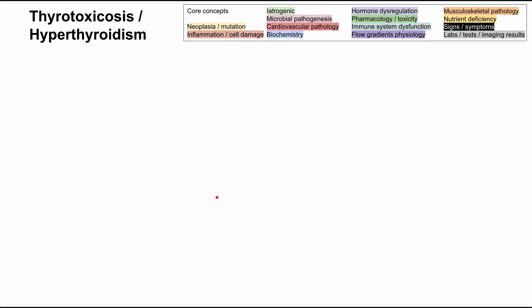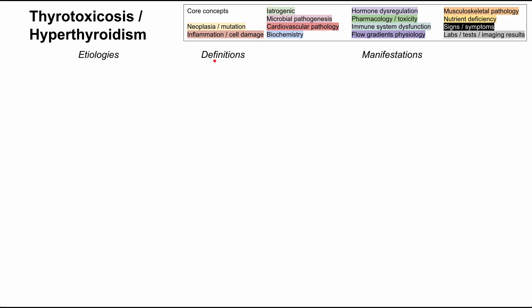This is a mechanism of disease map for hyperthyroidism and thyrotoxicosis. As in all these mechanism of disease maps, the color code key is up here, so each of the boxes will be colored according to these core concepts. In this video, we'll be talking about the definitions of thyrotoxicosis and hyperthyroidism, which are similar but have subtle differences. We'll talk about the many etiologies of these conditions as well as the many manifestations for both of them.